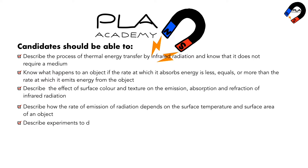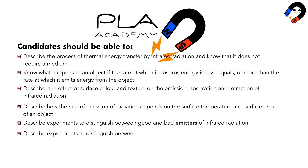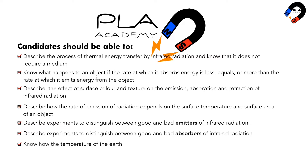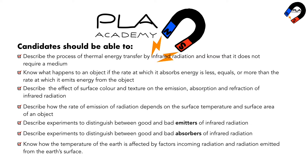Describe experiments to distinguish between good and bad emitters of infrared radiation. Describe experiments to distinguish between good and bad absorbers of infrared radiation. Know how the temperature of the Earth is affected by factors including incoming radiation and radiation emitted from the Earth's surface.